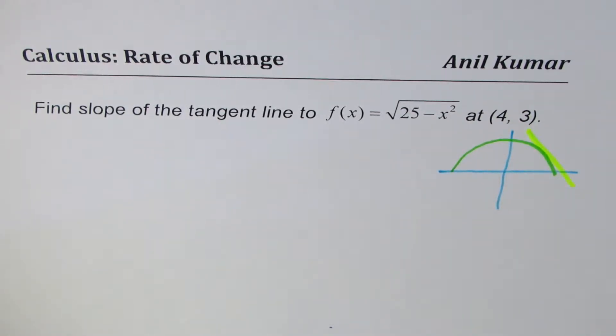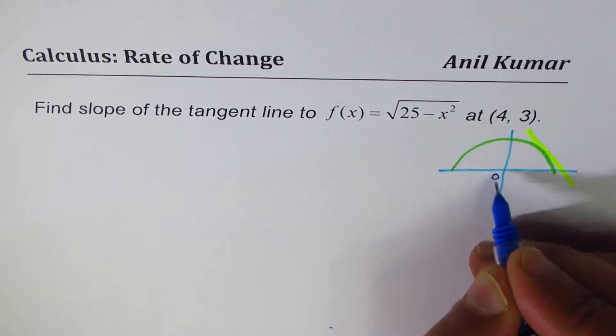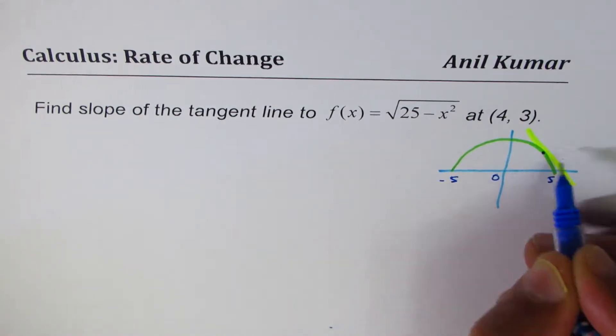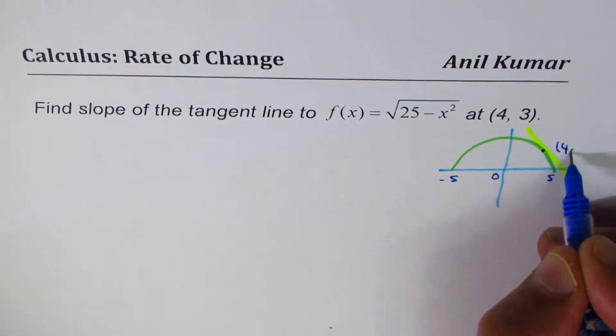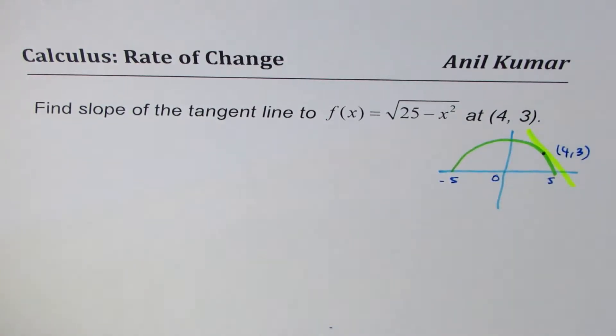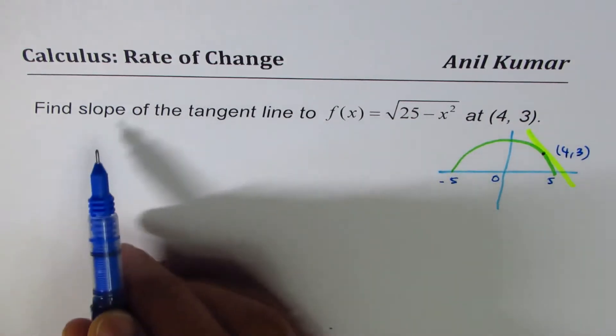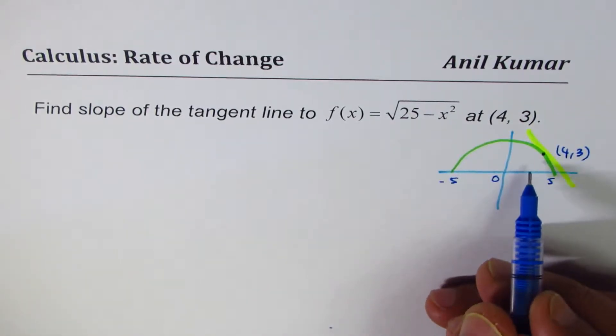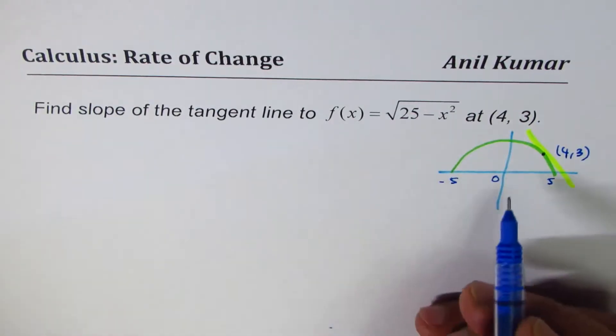So that is the equation before us. This is 0, the radius is 5. And that is the point (4, 3) we're talking about. And we need to find the equation of, or rather, you can find the equation of the tangent line. We'll restrict ourselves to just finding slope of this tangent line. Now, slope of the tangent line we can get using different ways.